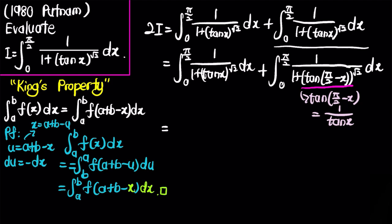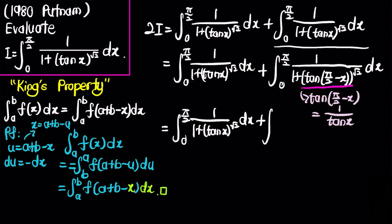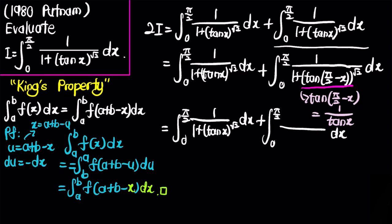So the first part remains the same, and the second part becomes the integral of 1 over 1 plus (1/tan x)^√2 dx. Multiplying the top and bottom by tan^√2(x), the second integrand rewrites as tan^√2(x) over 1 plus tan^√2(x).